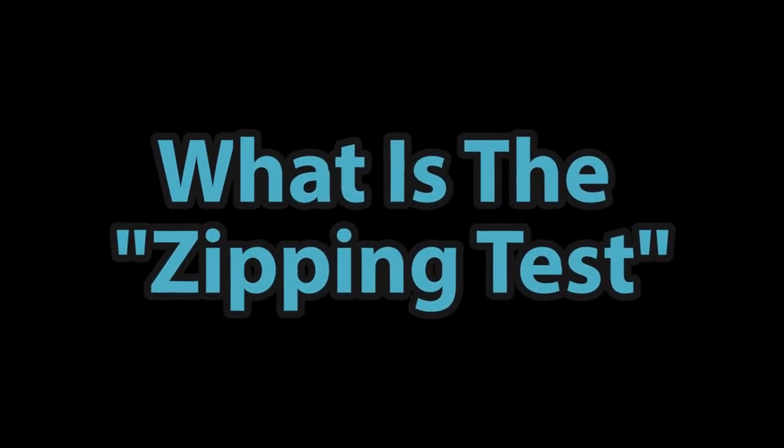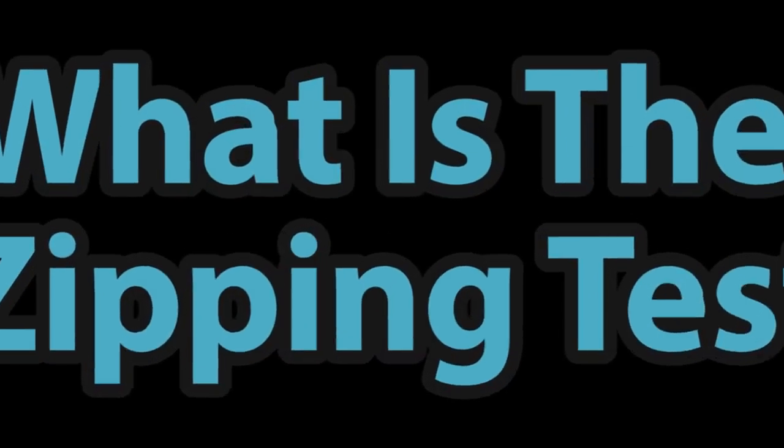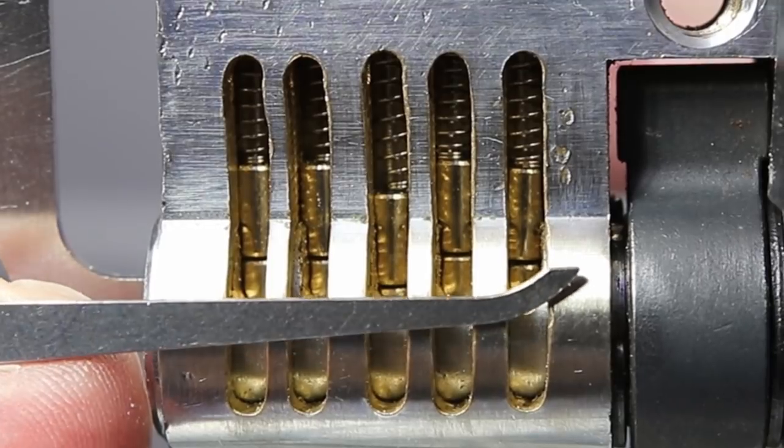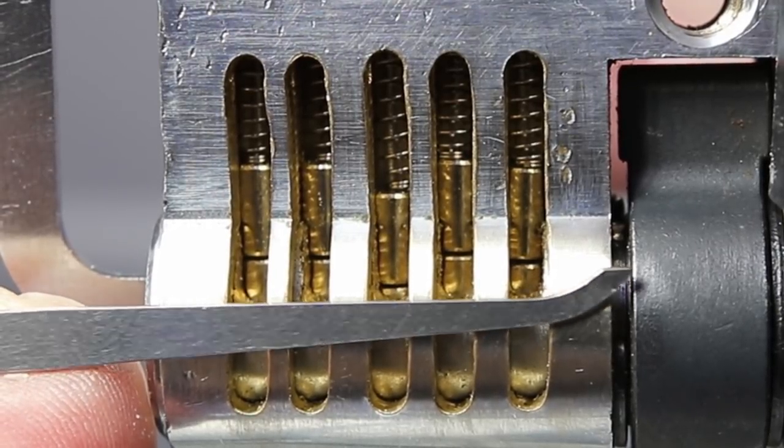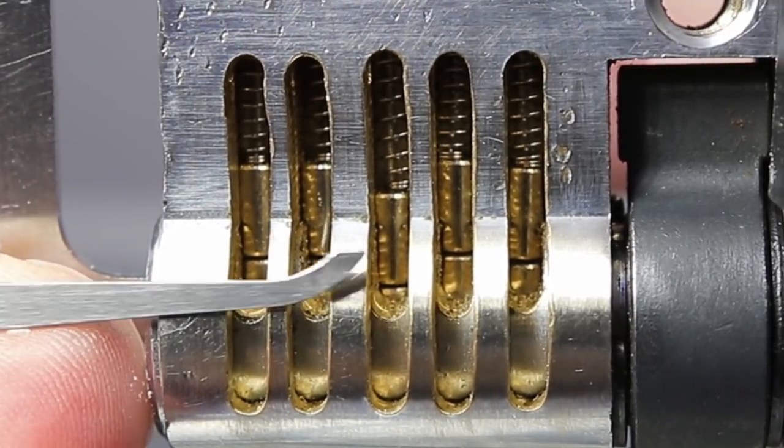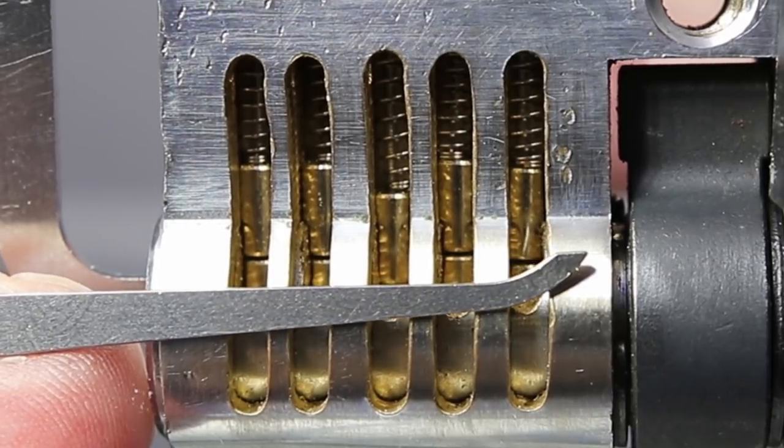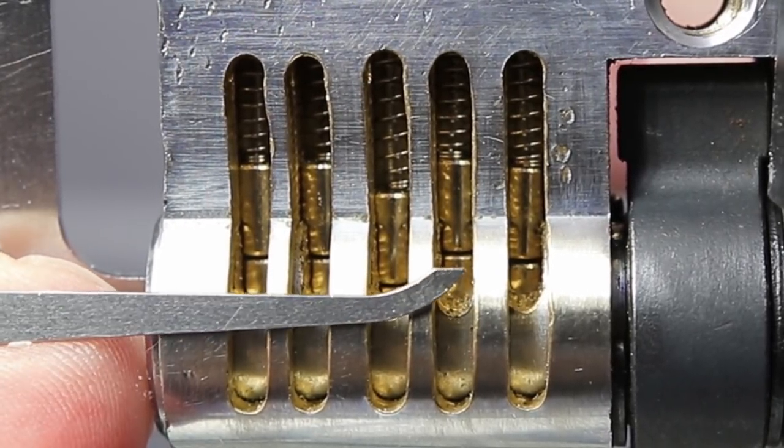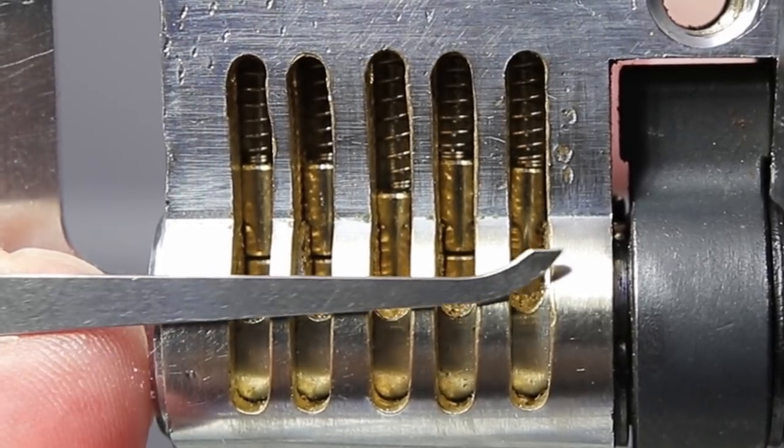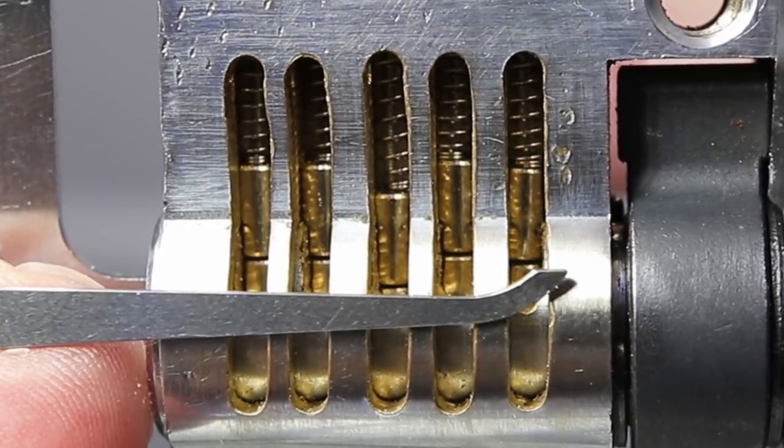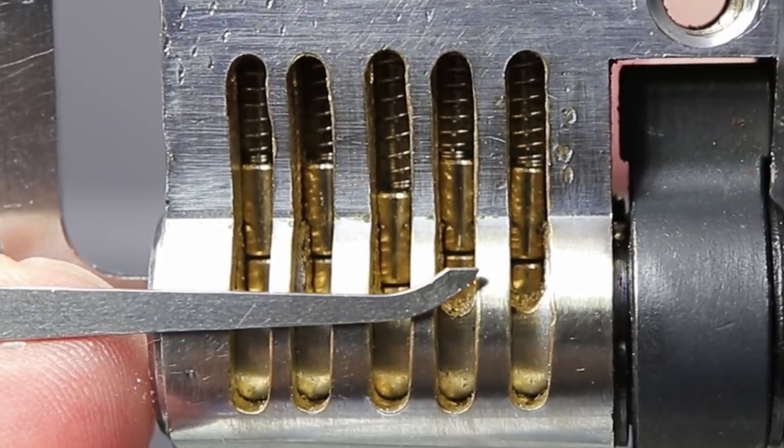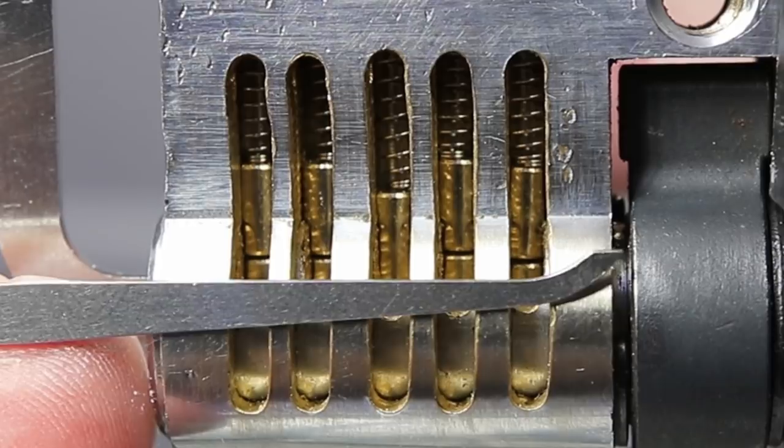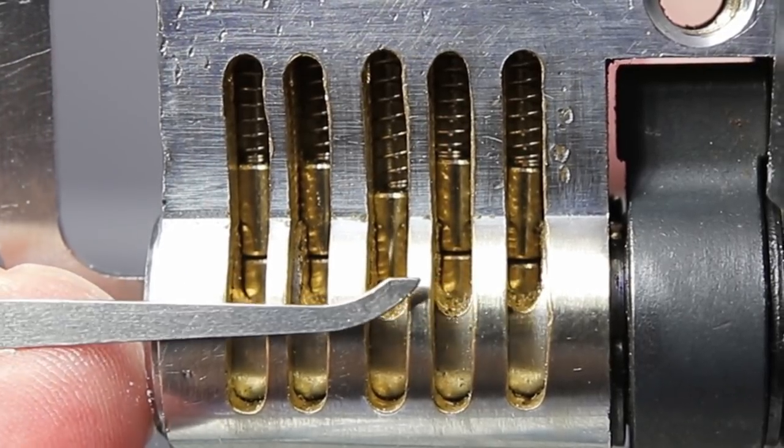So what is the zipping test? The zipping test is when you have a partially picked lock and you're looking for the next binding pin. What you're going to do is place your pick in the back of the lock and just slowly withdraw it. What's going to happen is on the binding pin your pick is going to get stuck on the key pin that is binding up with the driver pin above it. When you are picking a lock by single pin picking it is not always very obvious which pin is binding up, and by doing this really light zipping technique you can often identify the next pin you're going to need to work on.